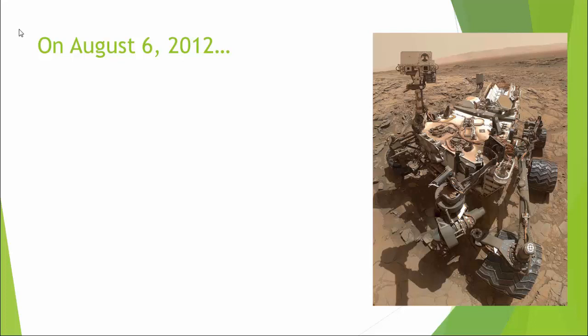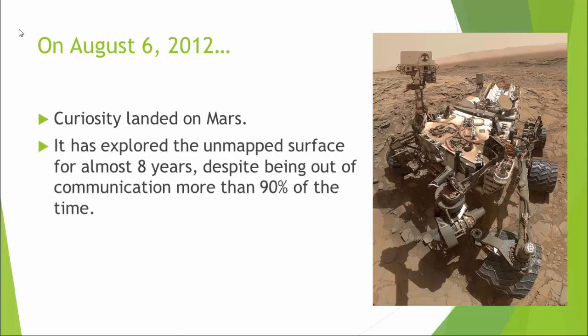Let's move forward five years. On August 6, 2012, Curiosity landed on Mars. It's been almost eight years since that happened, as of the time of cutting this video. Curiosity has been exploring the surface of Mars, even though the operators of this device are out of communication more than 90% of the time, and when they are in communication, the speed of light implies that their commands to the rover are delayed by minutes or even hours.